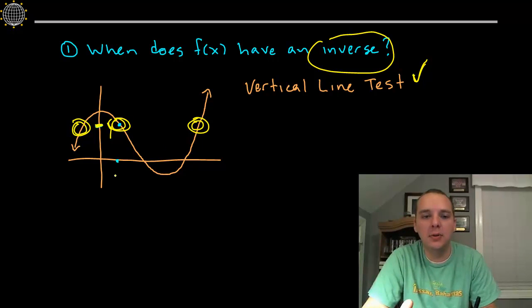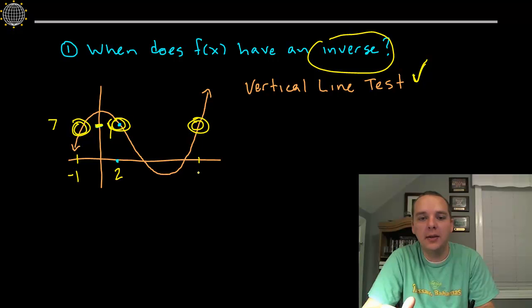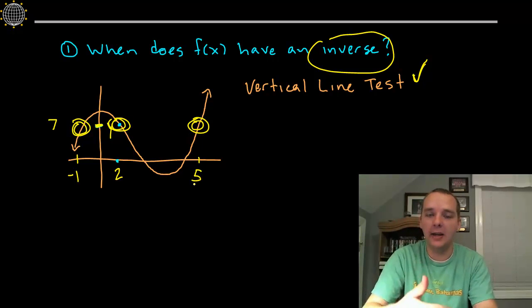I'll make up some quick numbers to help you understand this. Let's say this x is 2, and this y is 7, and these other x's are negative 1 and 5, okay? So currently, this is fine, negative 1 can go to 7, and 2 can go to 7, and 5 can go to 7.